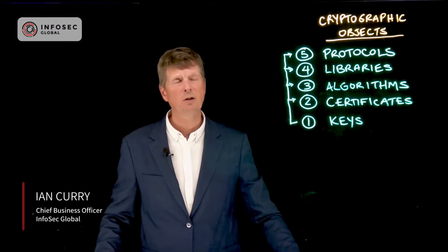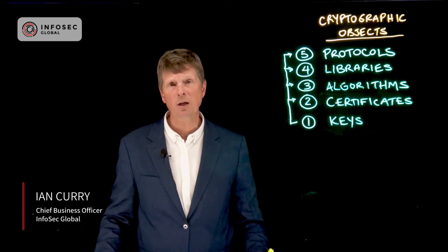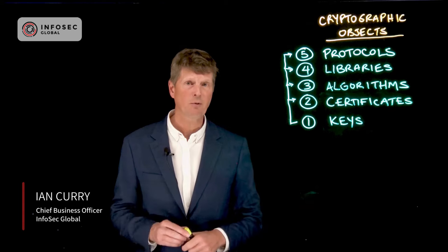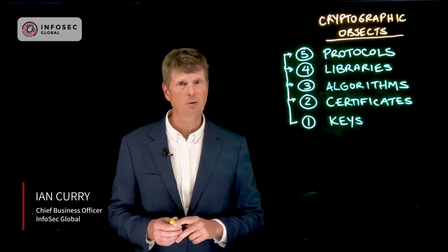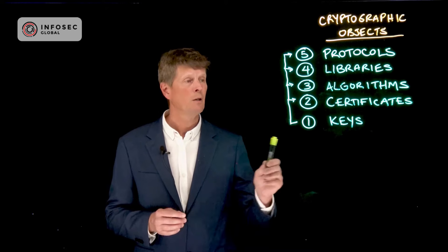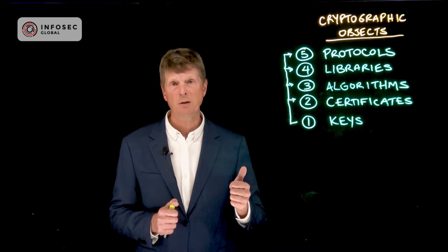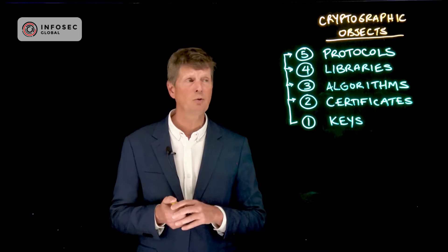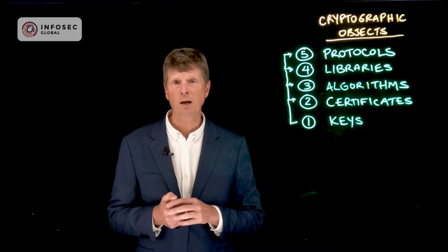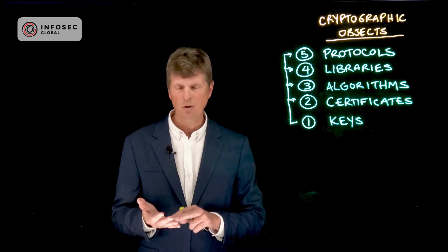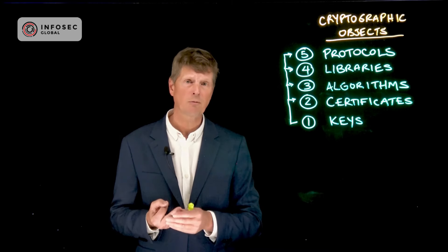Hello, my name is Ian Currie, and today we're going to talk about the different types of cryptographic objects and why it's so important for organizations nowadays to get a full comprehensive inventory of all the different types of cryptographic objects across their digital landscape. The first type of cryptographic object is keys, the second type is certificates. Keys and certificates are used in algorithms to provide valuable capabilities like authentication, digital signature, and encryption.